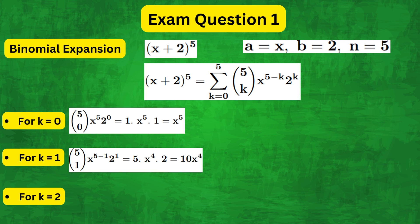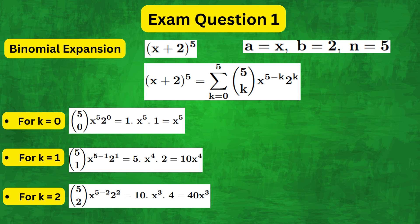Then for k equals 2, 5 combination 2, x to the power of 5 minus 2 times 2 squared, which equals 40x cubed.